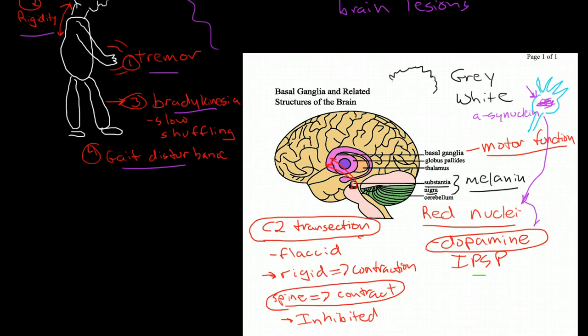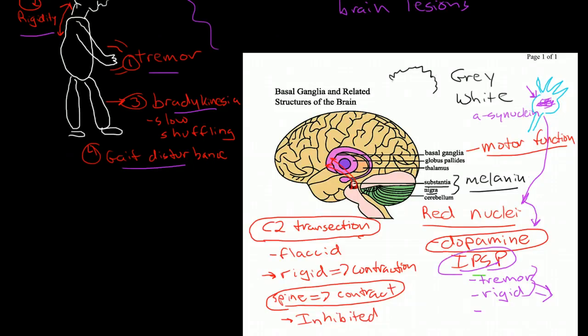If we are no longer inhibiting, the muscles are going to contract and relax. You're going to develop a tremor. The muscles that are contracting and not relaxing at all are going to be very rigid. You're going to have bradykinesia and gait disturbances as a result of these two things. So this has to do with the loss of dopamine, which serves as an inhibitory postsynaptic potential within the basal ganglia, which controls the inhibition of the motor nervous system.